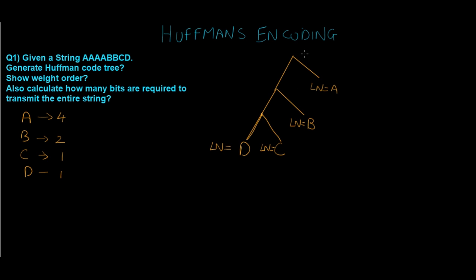Now we assign 0 and 1 to each branch. We assign 0 to the left branch and 1 to the right branch — or vice versa depending on your scheme. We apply this to all branches throughout the tree, so every branch gets either a 0 or a 1 assigned to it.